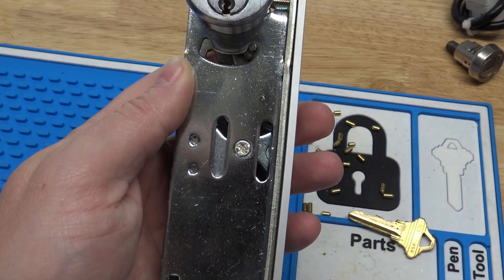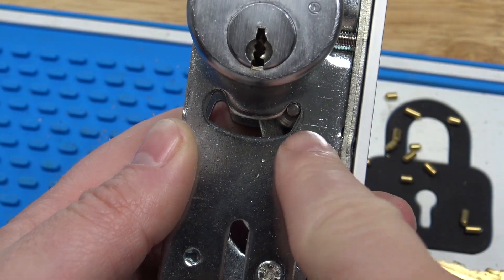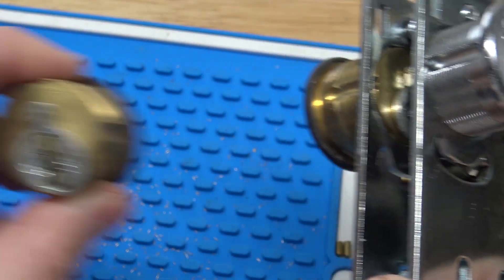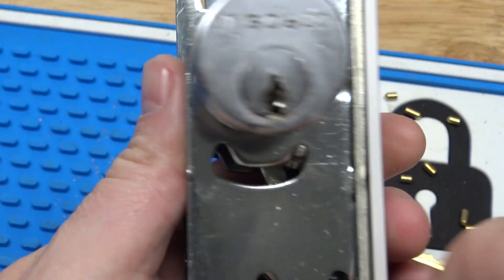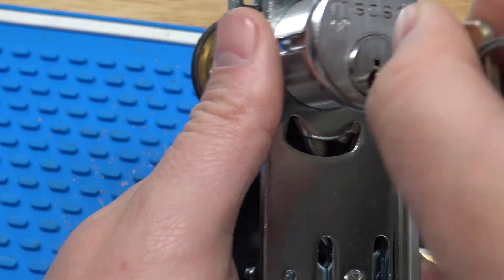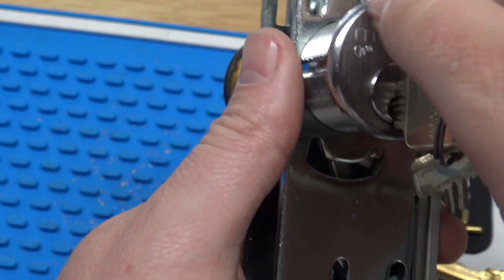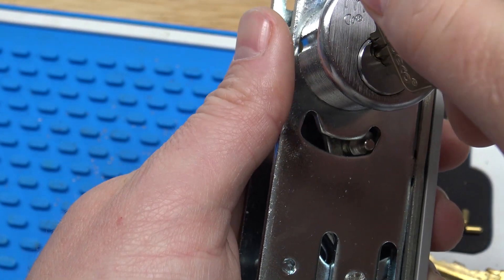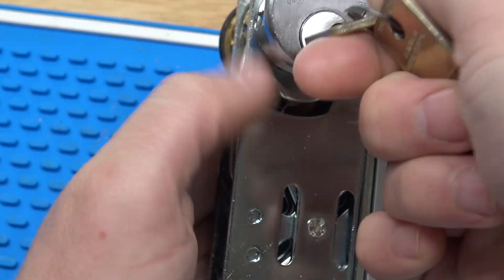So the way these locks work is you'll see right here's a little bar, and then of course the mortise lock's got a cam on it. So we go ahead and lock it here. Just pay attention to that bar right here - when I lock it, the cam hits it, pushes it down, and then that actually throws the bolt.